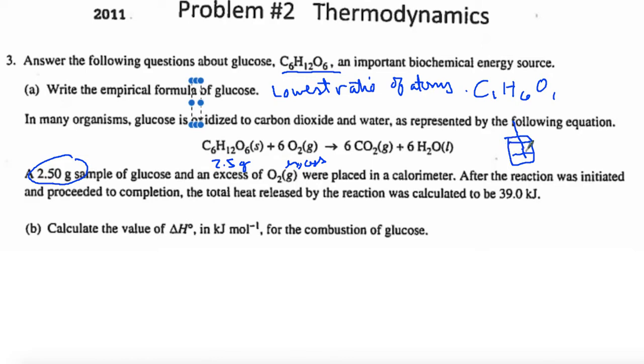When we did calorimetry, we were able to figure out what Q was. They're telling us this is Q, but we don't want Q. Q is the amount of heat for this many grams. What they want us to find, I'm sorry, I'm jumping ahead of myself. We want to calculate the value for delta H in kilojoules per mole.